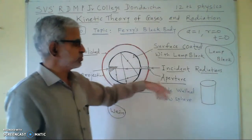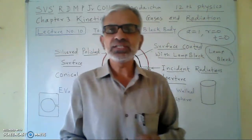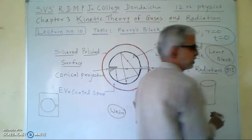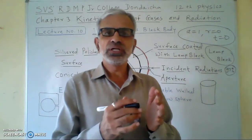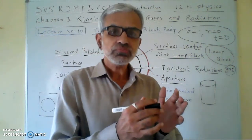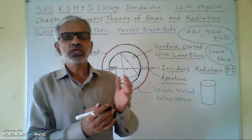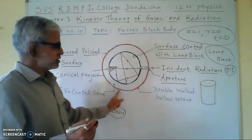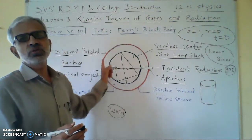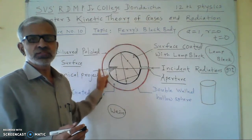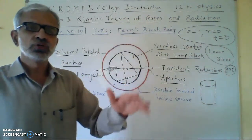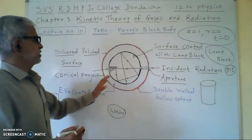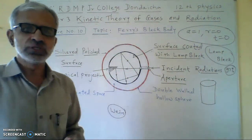The property of lamp black is that it absorbs 97 to 98% of the heat incident upon it. The inner surface of the sphere is coated with lamp black, and the outer surface has a silver polish applied to it. This is the construction of Ferry's Perfectly Black Body.